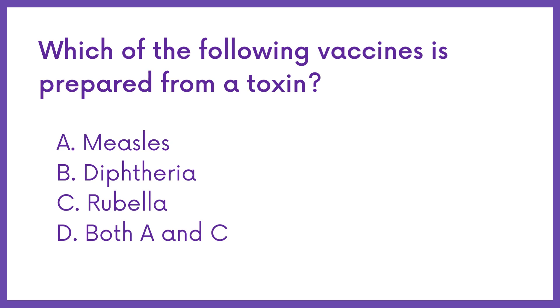Which of the following vaccines is prepared from a toxin? Option A: Measles. Option B: Diphtheria. Option C: Rubella. Option D: Both A and C.